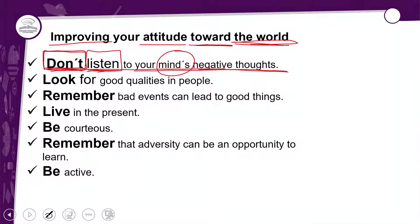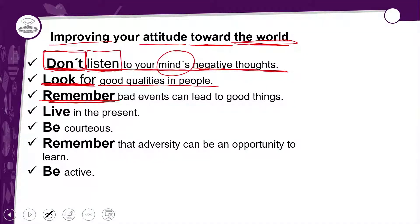Para melhorar sua atitude em relação ao mundo: 'Look for good qualities in people' — procure boas qualidades nas pessoas. O verbo 'look' junto com a preposição 'for' tem a tradução de 'procurar'. 'Remember bad events can lead to good things' — lembre-se que eventos ruins podem levar a coisas boas. Há males que vêm para o bem.